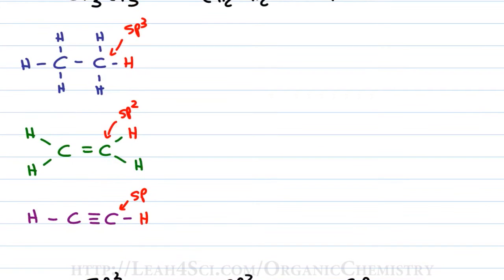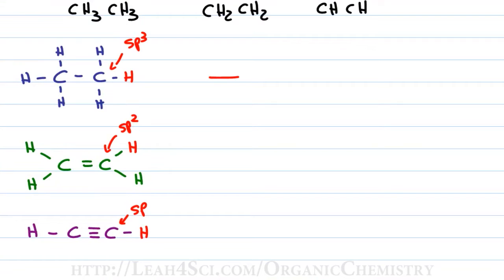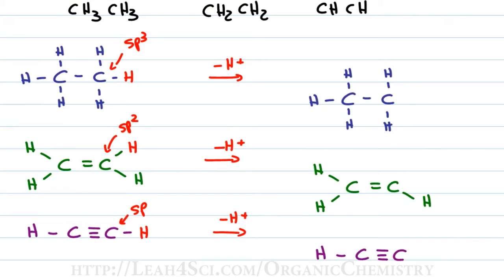So let's go back to our initial example and show what it looks like after we deprotonate the acidic hydrogen and look at the conjugate bases. Because we remove the hydrogen, we have to show the negative and the lone pair of electrons. For the first one, because it was sp3, we have 25% s character.